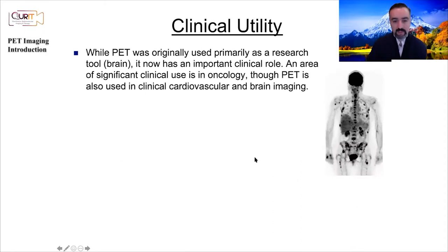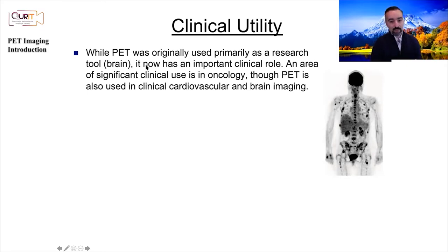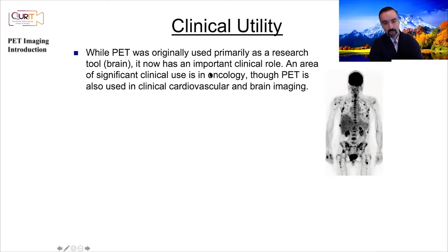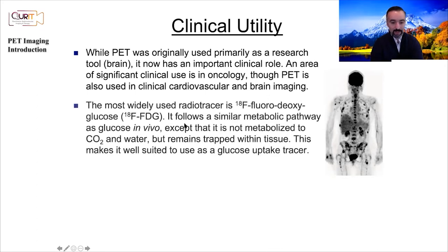PET was originally envisioned as a research tool, particularly for the brain — that's where fluorodeoxyglucose FDG-PET was used. But it's really found important routine clinical applications beyond research. It continues to be used extensively for both clinical imaging and research-oriented studies. An area of significant clinical use has been oncology, though PET is also used in other clinical frontiers such as cardiovascular and brain imaging, especially with the emergence of amyloid imaging for Alzheimer's disease.